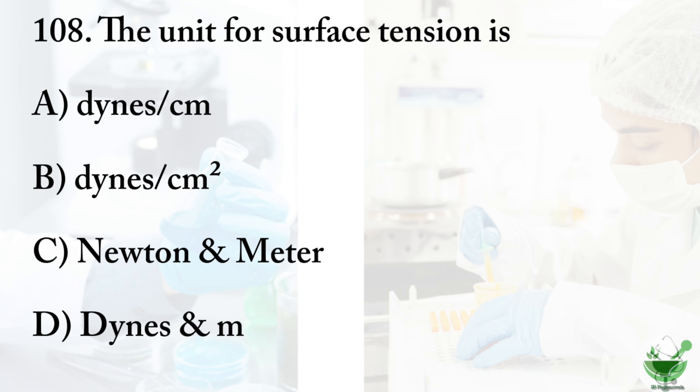Question number 108: The unit for surface tension is — Option A: dynes per centimeter. Option B: dynes per centimeter square. Option C: newton and meter. Option D: dynes and meter. The correct option is option A, dynes per centimeter.